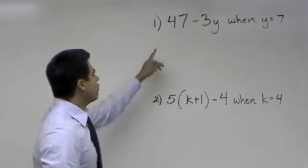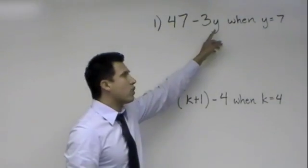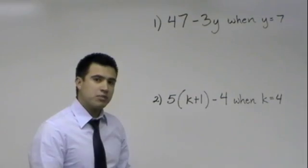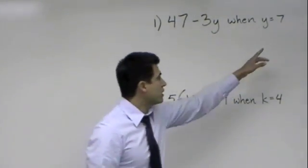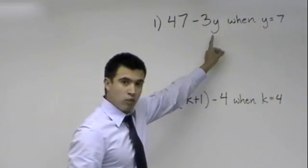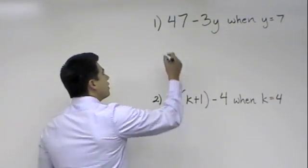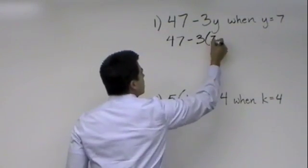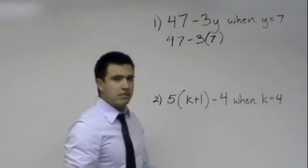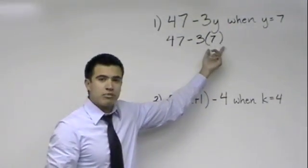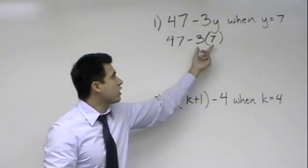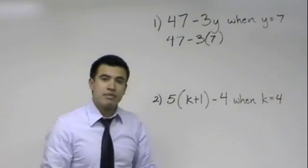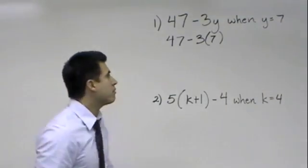The first problem we have is 47 minus 3y when y is equal to 7. So when evaluating expressions given a variable the main thing we want to remember is to go ahead and plug 7 in for y. So we would go ahead and rewrite it as 47 and then we're going to rewrite this but we're going to put a 7 in there. So whenever we substitute a number for a variable you can go ahead and put it in parentheses like this. And remember before we left to the carnival what did I tell you? Whenever you have two numbers next to each other like that that means multiplication. Always remember that.